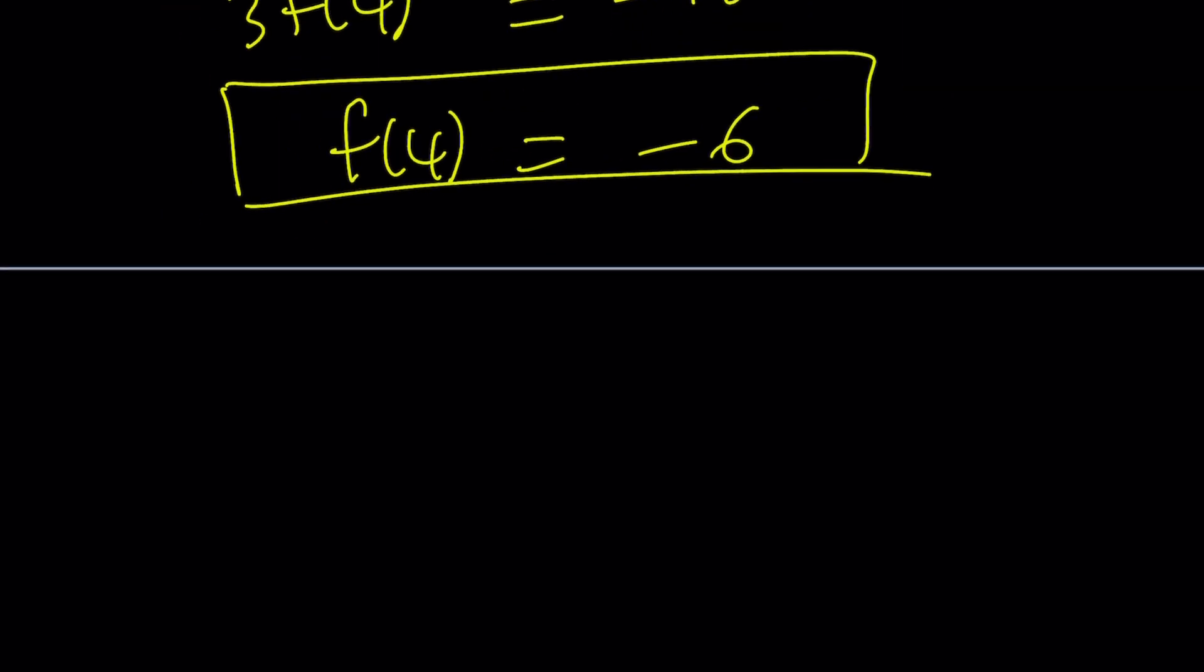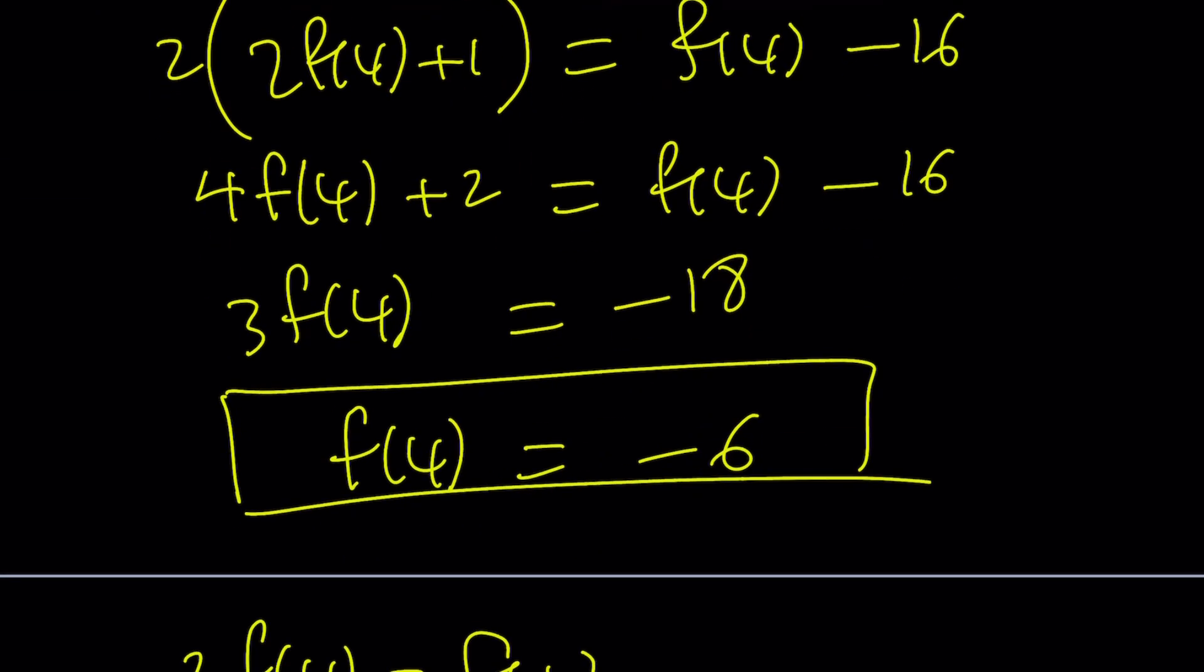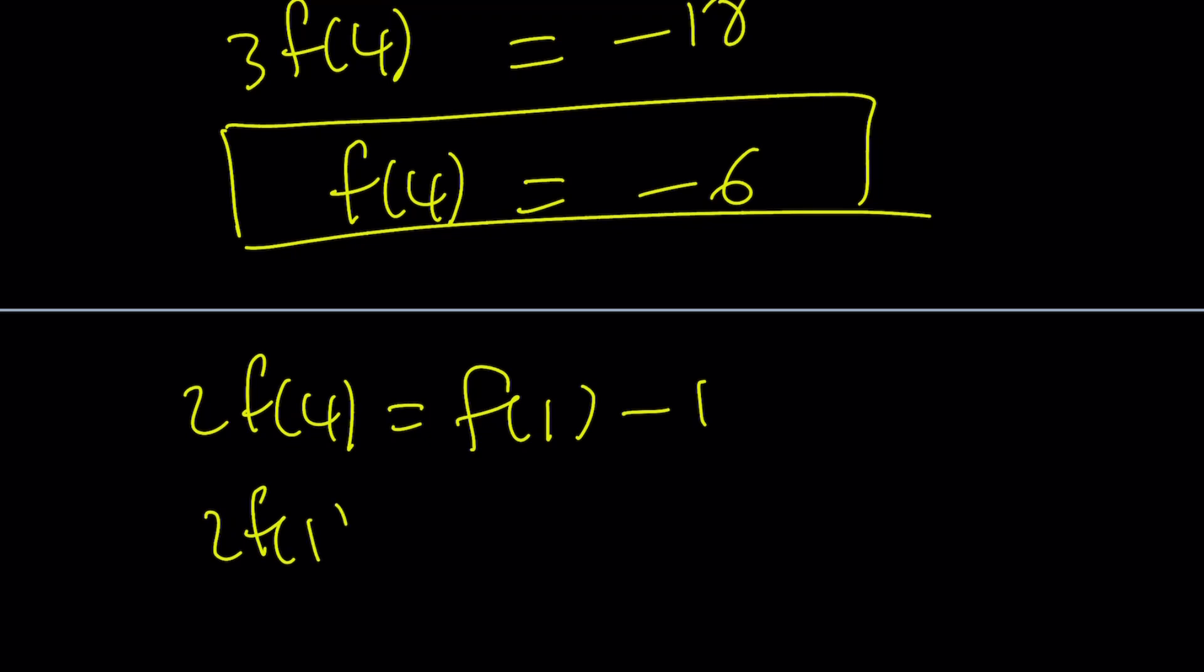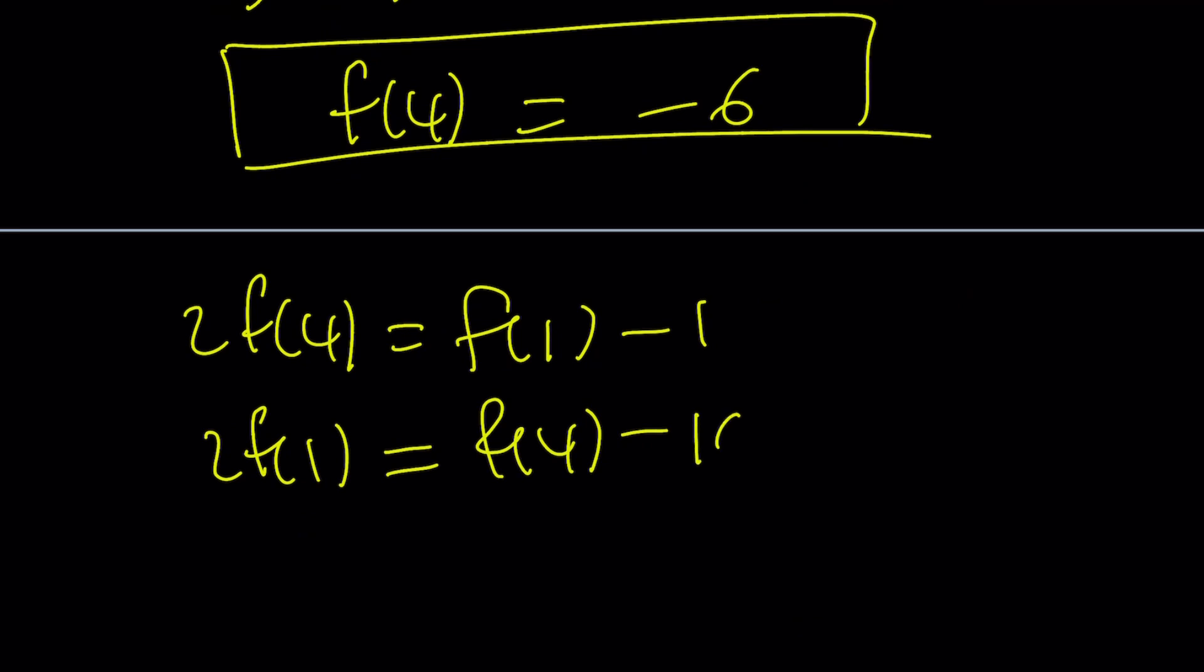So we have 2f of 4 equals f of 1 minus 1. And the other one is 2f of 1 equals f of 4 minus 16. So we have these two equations. That's a system, and I would like to use elimination.